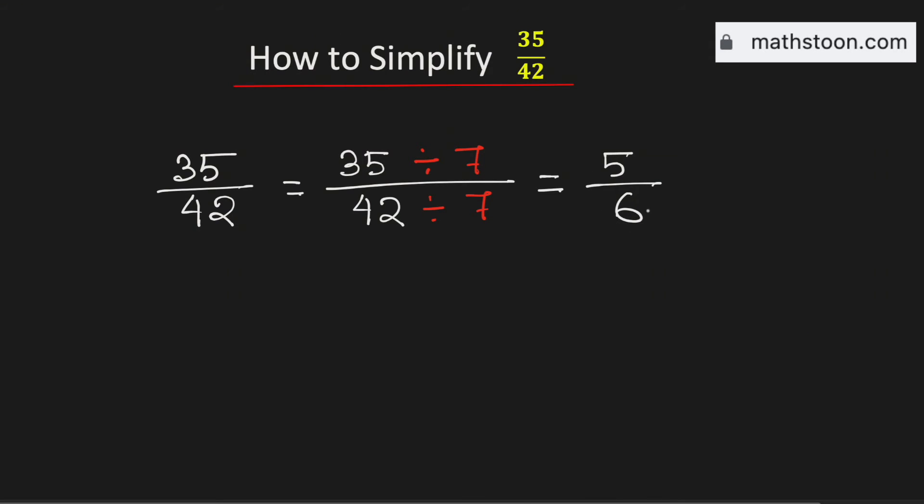Now look that only one can divide both the numbers 5 and 6. It means this fraction cannot be simplified further. Thus we say that 35 over 42 simplified is equal to 5 over 6. And this is our final answer.